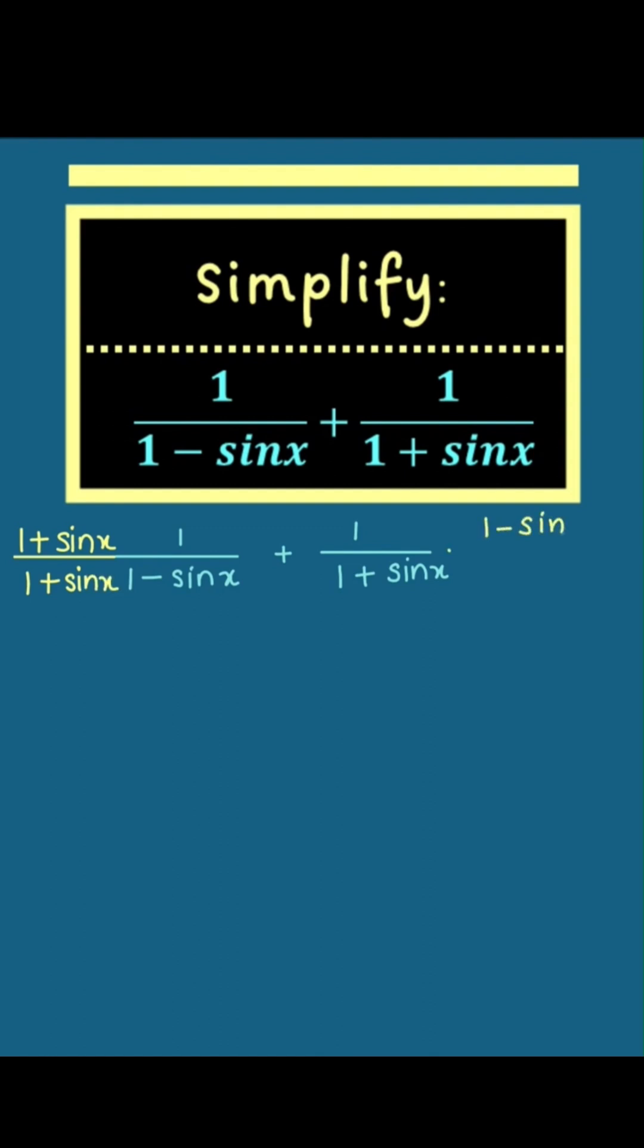To do so, we will multiply and divide the first term by 1 plus sin x, and the second term by 1 minus sin x. This makes the denominator of both terms 1 minus sin squared x.